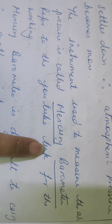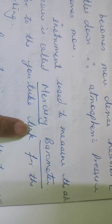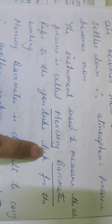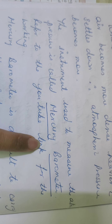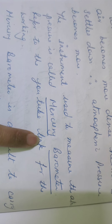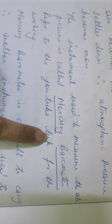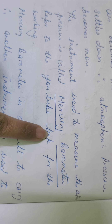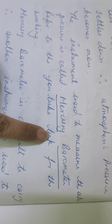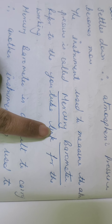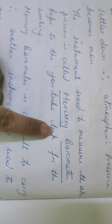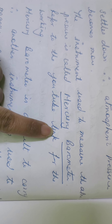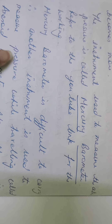The instrument used to measure atmospheric pressure is a mercury barometer. This is an old instrument. In the 1700s, another instrument was devised — an aneroid barometer.